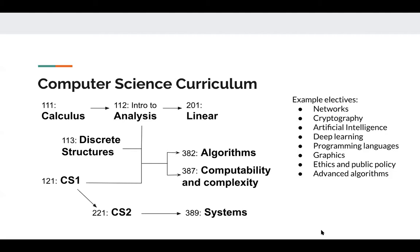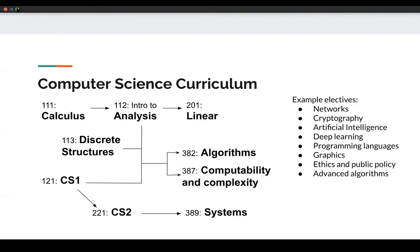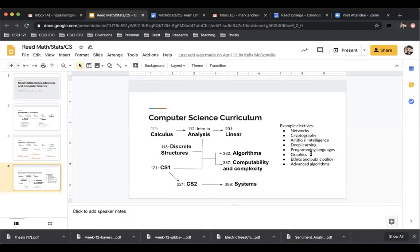We also have a wide range of electives — you need to take at least four as part of the major. Because we're a liberal arts college, electives change year to year depending on what faculty are teaching. Some examples that come up regularly: networks, cryptography taught by our cryptographer, artificial intelligence, an introduction to deep learning, and natural language processing in the fall. Jim Fix, our chair, focuses on programming languages and graphics. I'll let Anna talk about computational biology offerings in the biology department.